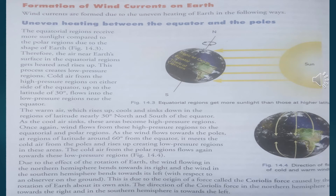The warm air which rises up cools and sinks down in the region of latitude nearly 30 degrees north and south of the equator. As the cool air sinks, these areas become high pressure regions. Once again wind flows from this high pressure area towards the equator and the polar regions. As wind flows towards the poles at latitudes of around 60 degrees from the equator, it meets warm air that rises up, creating another low pressure area.